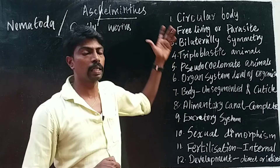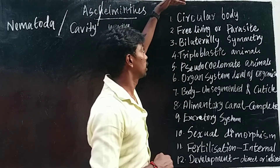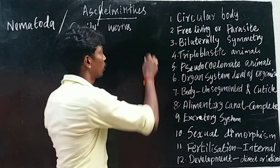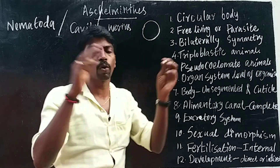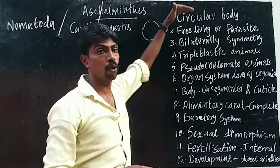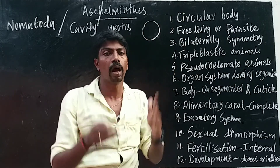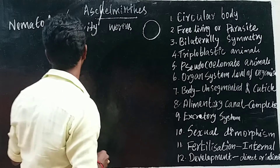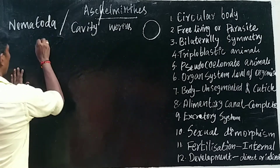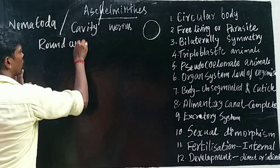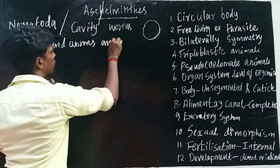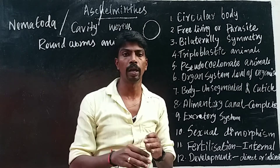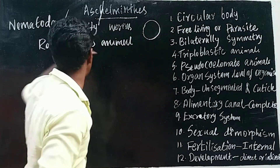The first characteristic feature: these animals have a circular body. In cross-section, the body is round in shape — circular. All the animals in this phylum are round in cross-section, so they are also known as roundworm animals.